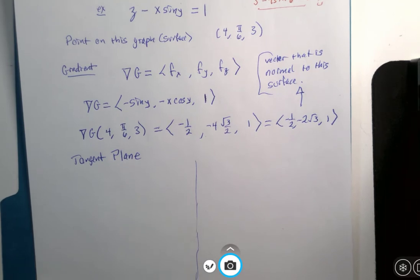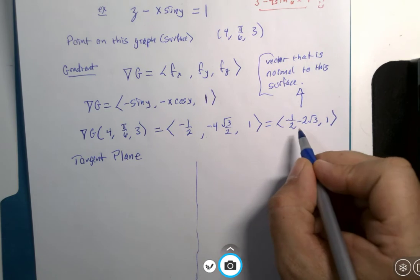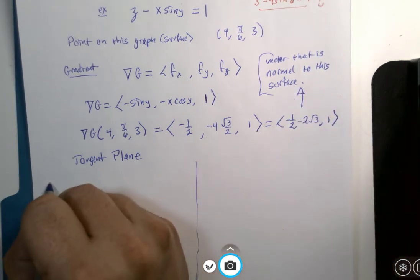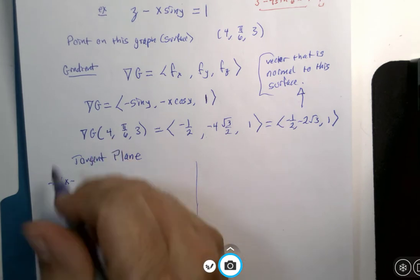And let's see here, I've got my normal vector. So this is going to be my normal vector, negative 1/2, x minus, I need an x coordinate is 4,